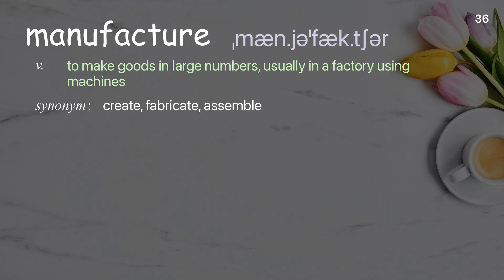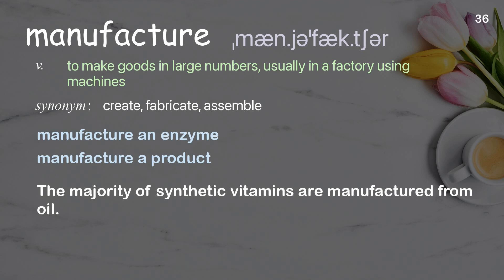Manufacture: to make goods in large numbers, usually in a factory using machines. Examples: manufacture an enzyme, manufacture a product. The majority of synthetic vitamins are manufactured from oil.